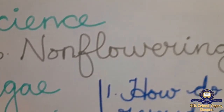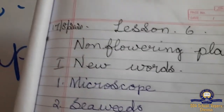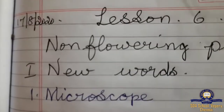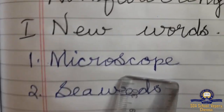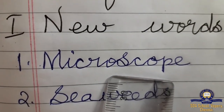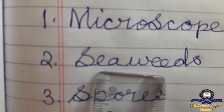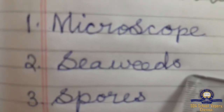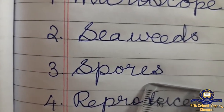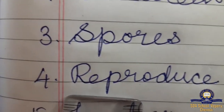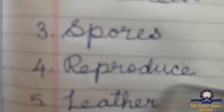Now we are going to see some spellings. In the last video I have taught the spellings, let us recap them too. The new words are: first, microscope — M-I-C-R-O-S-C-O-P-E; seaweeds; spores — S-P-O-R-E-S; reproduce — R-E-P-R-O-D-U-C-E.